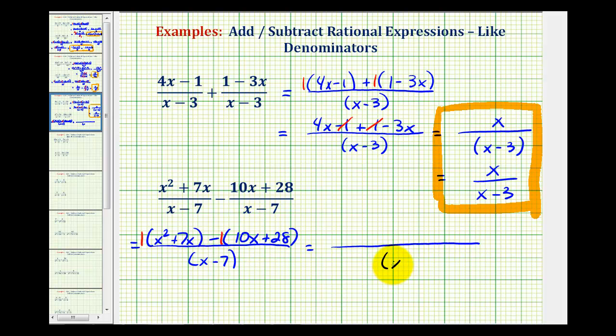So our denominator is the quantity x minus 7. And the numerator here, we'll have x squared plus 7x. But because we're distributing a negative 1, we're going to have minus 10x minus 28. Again, notice when subtracting, the signs of these two terms changed. And now we'll combine the like terms in the numerator. 7x minus 10x would be negative 3x. So we'll have x squared minus 3x minus 28 all over the quantity x minus 7.